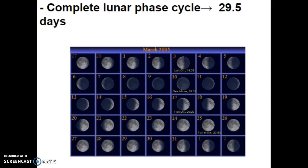The complete lunar phase cycle — in other words, when the Moon goes from a new Moon phase back to a new Moon phase — takes about 30 days. This is why our calendar is lunar based. There are 12 months in a year because the Moon goes through its complete phase cycle in about 30 days.